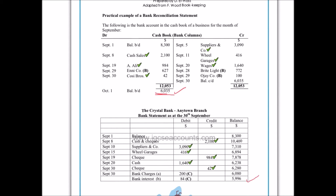There will be items that the accountant working at the bank doesn't know about, which won't have been entered in the bank statement they constructed. There will also be money going in and out of our bank account that our accountant doesn't necessarily know about. What we're saying is that the difference in the amount of money is only as a result of a delay in time. In other words, our accountant has to update the cash book, and the bank statement will be updated the next time we receive a statement — in this case at the end of October.